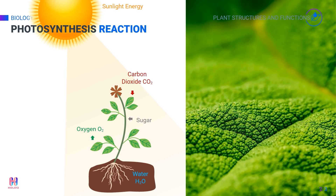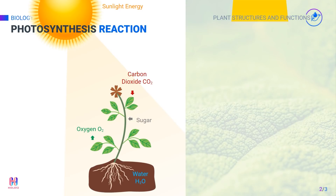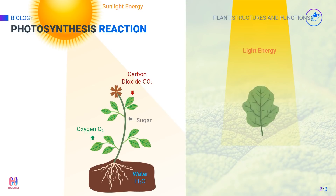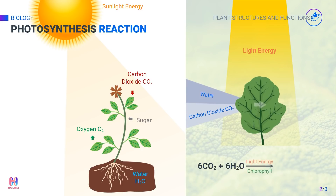which traps light energy from the sun. This light energy is converted to chemical energy, which is used to power the reactions of photosynthesis. The reactants carbon dioxide and water are converted into the products glucose and oxygen with the help of sunlight. Because it takes in energy, photosynthesis is considered an endothermic reaction.